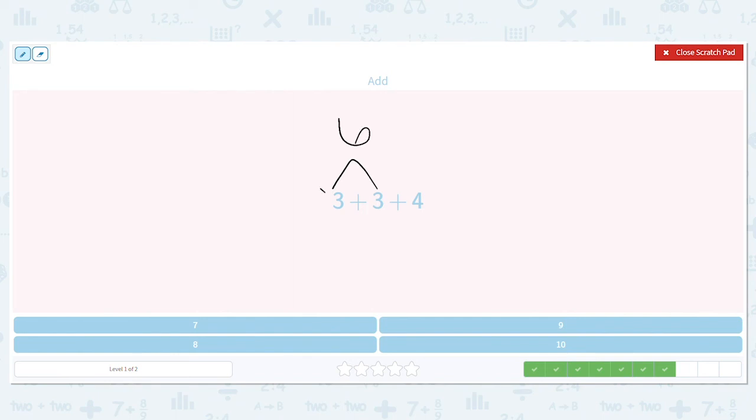Nice job. Crossing out those threes. I'm done with them now. I added them. So I have six and four left. Six plus four equals what? That equals ten. Good job.